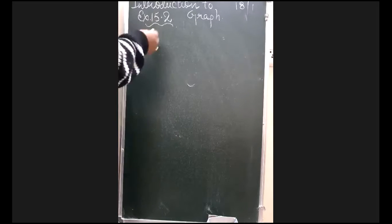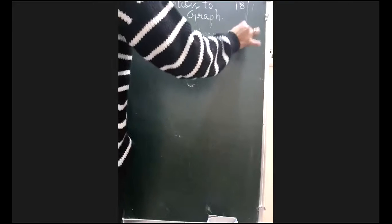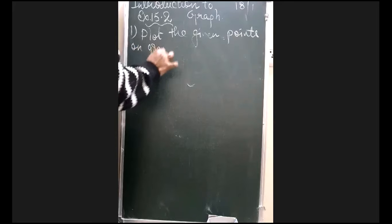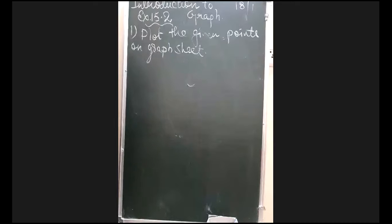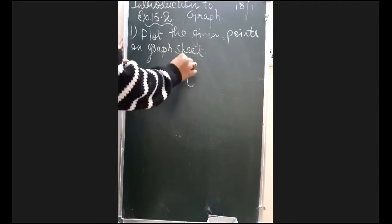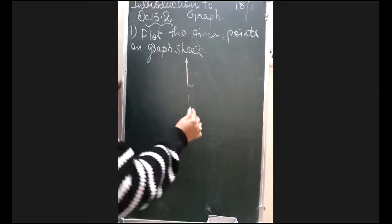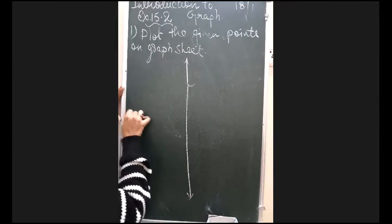Okay, so whenever the question comes like plot the given points on graph sheet, and it is asking verify if they lie on a line or not. In that case, suppose whatever the points will be given to you, I will give you later on before this exam. In the exam you have to write it, but remember the location you have to plot the graph yourself. You have to make it by your own.